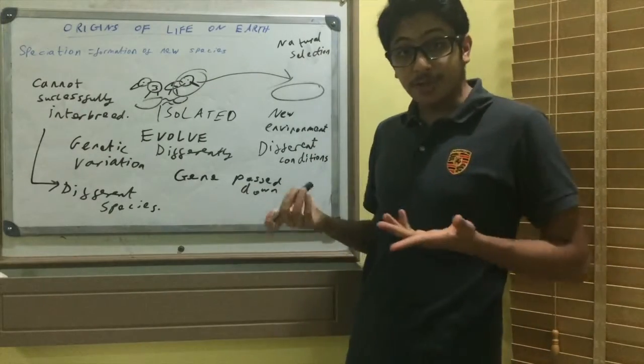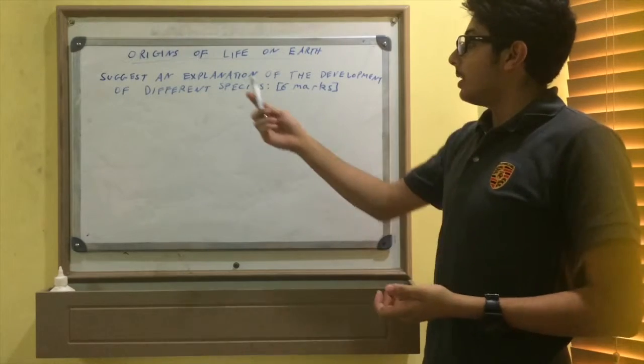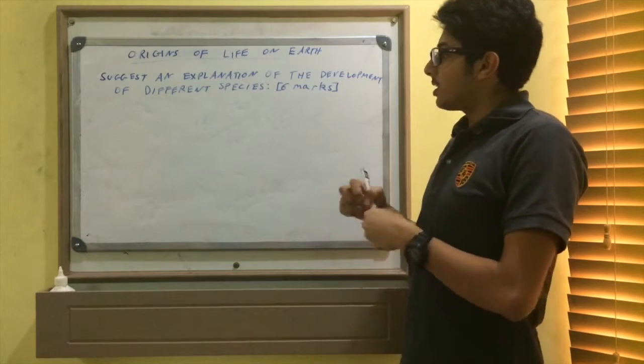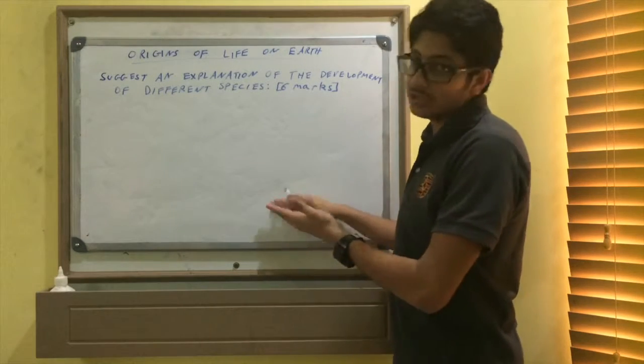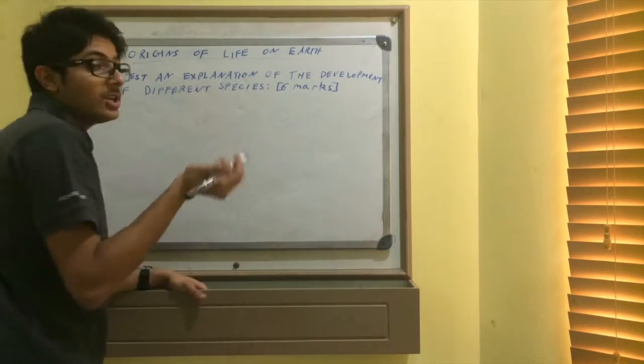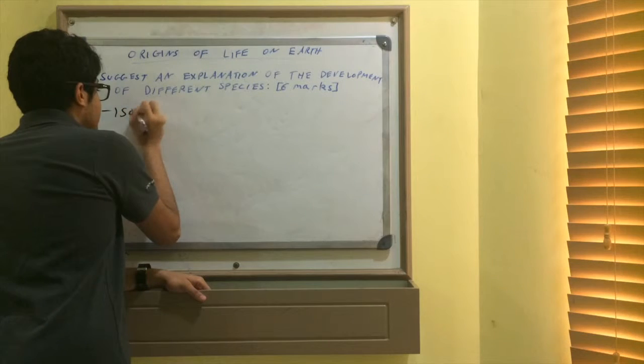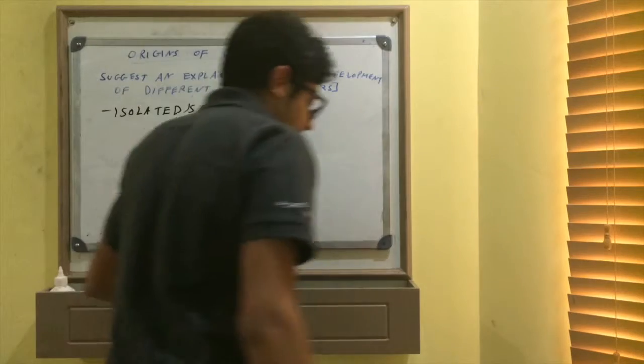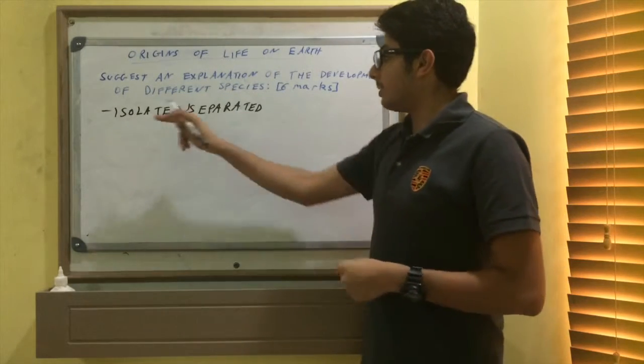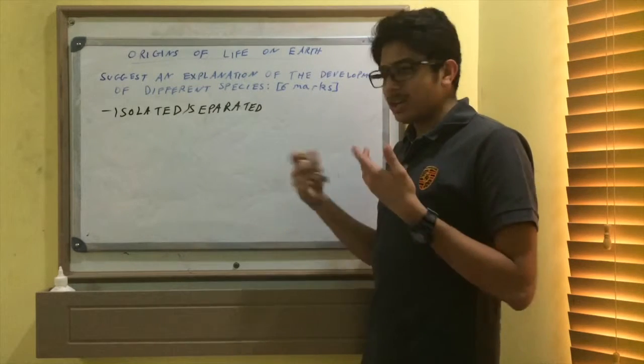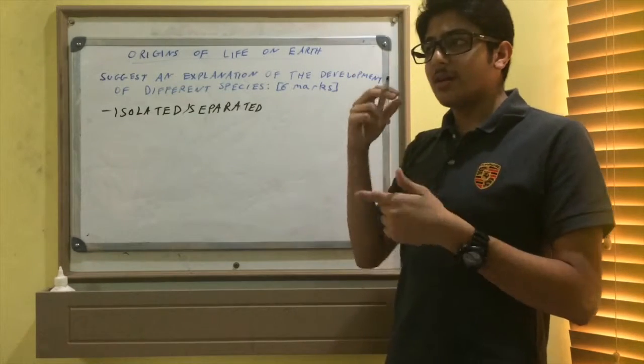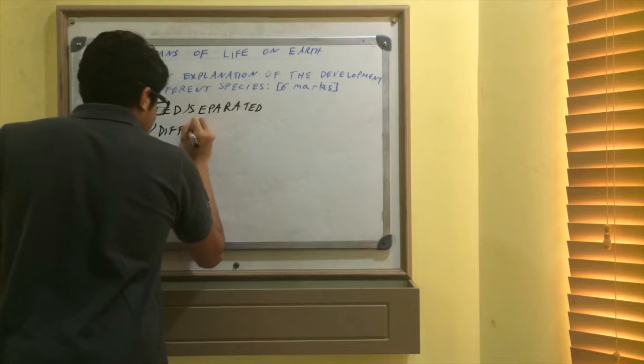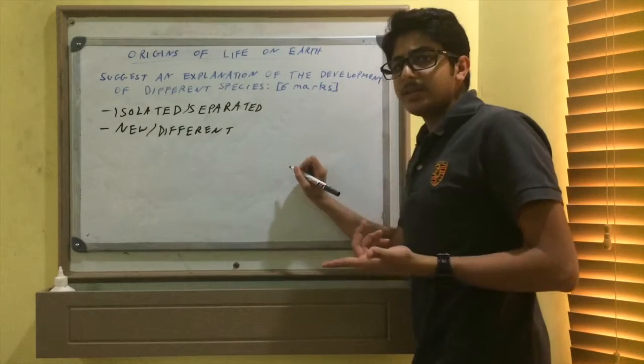This is a standard six marker: Suggest an explanation of the development of different species. First of all, for speciation to take place, two populations are isolated or separated. They might give you two populations in your case study and you're going to see that they were isolated or separated, usually by migration. Because they are now isolated and separated, they are in a new or different environment or conditions.